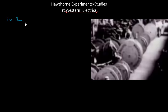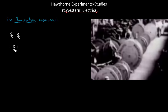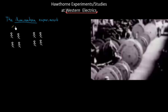In the illumination experiment, researchers came and tried to determine how changes in illumination would affect the output or productivity of workers. They took two groups — one group with normal, regular illumination and a second group with much stronger illumination so they could see better at the assembly room.